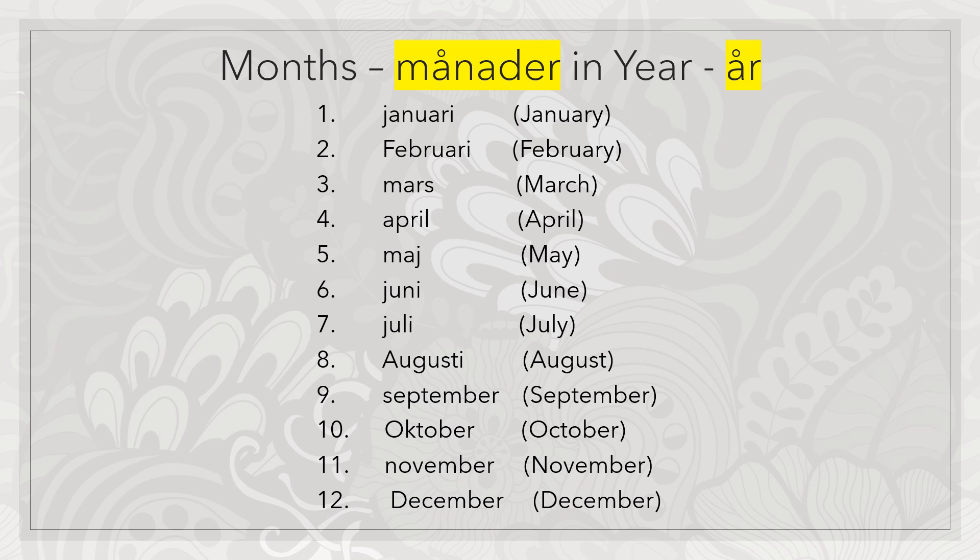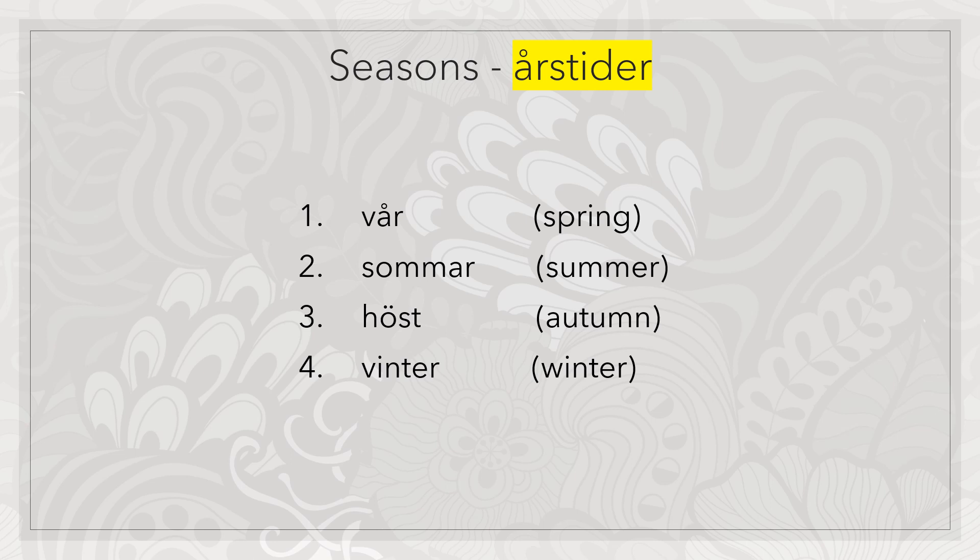Hope you understand guys. This is our last slide of the day and it is about the seasons. Seasons are called årstider in Swedish. Starting with number one: Spring is vår, Summer is sommar, Autumn is höst, Winter is vinter.